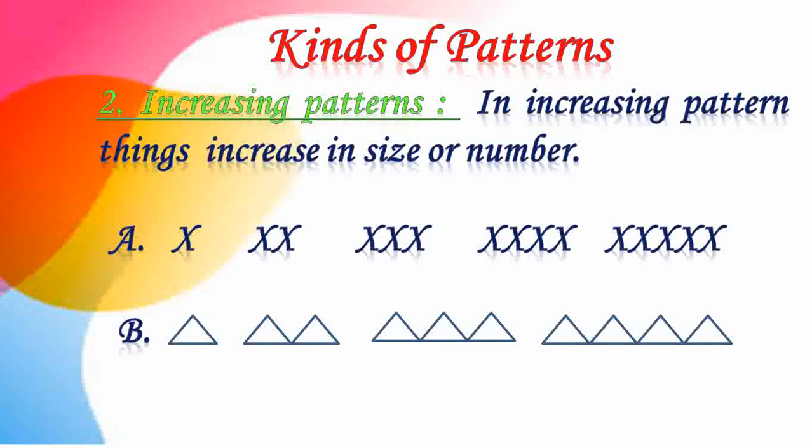In the second example, you can see the first shape — that is a triangle. It increases by one and becomes two triangles, then three triangles, then four. In this manner, the patterns are increasing in number or in size.